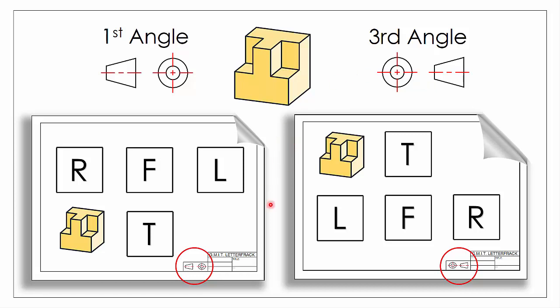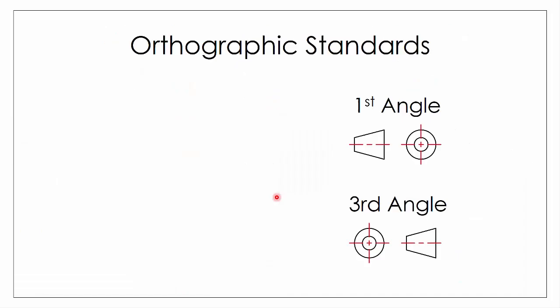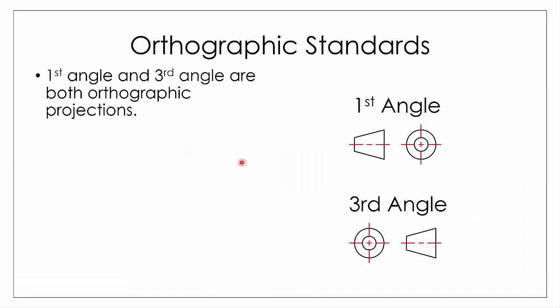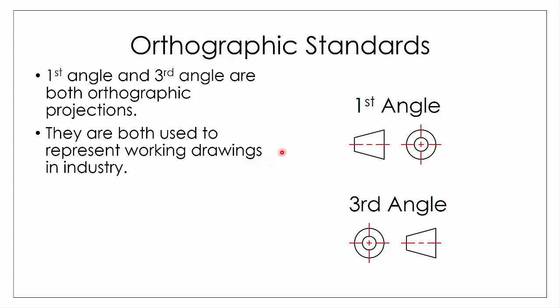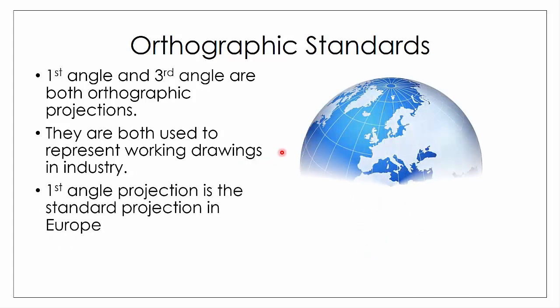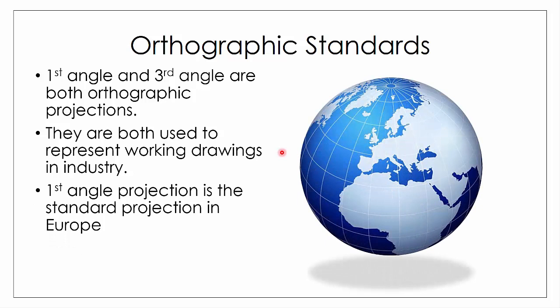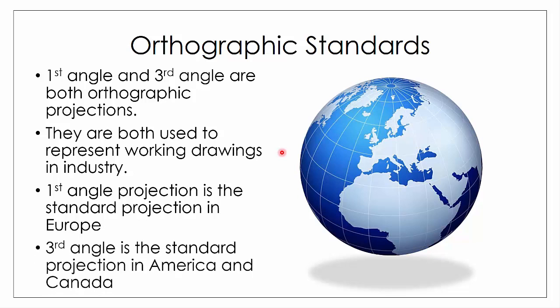Both first and third angle are orthographic projections — that is to say they give an undistorted, multi-view representation of the object, with views broken up into plan, elevation, and end view. Both are used to represent working drawings, so the function of both is exactly the same. Whether you use first angle or third angle depends on what part of the world you're in. First angle is the standard projection in Europe, whereas third angle is the standard in America and Canada. Generally speaking, where you're learning graphics determines which convention you use.